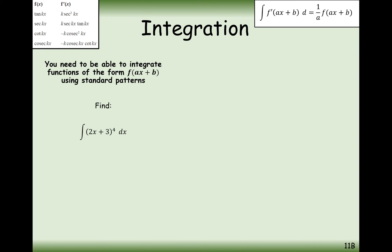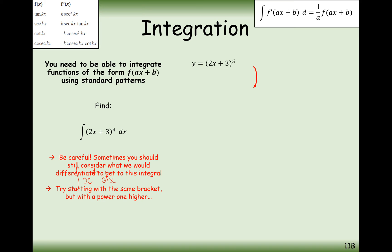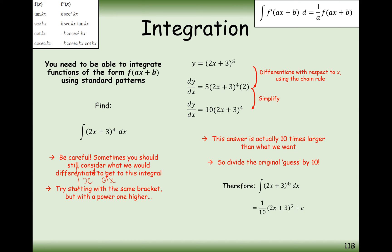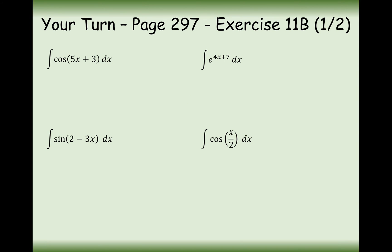For the next one, we're roughly following the pattern of the integral for x to the 4, but inside the brackets we've got 2x plus 3. We increase the power by 1, divide by the new power — so it'd be power of 5, divided by 5 on the outside — but we're also going to divide by the 2 on the outside, because that's what we have inside the brackets. Later on, when we've discovered more integral techniques, there'll be a better way of doing this question, so don't worry if you haven't quite understood that one.